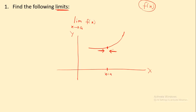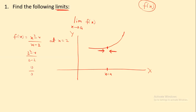For example, consider the function (x² - 4) / (x - 2). In this case, when x equals 2, we get 2² - 4 upon 2 - 2, which gives 0 upon 0. So what happens with 0 upon 0? Here we have 0 upon 0 — this is the indeterminate form.